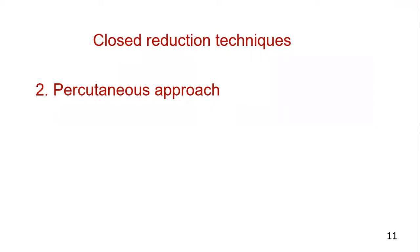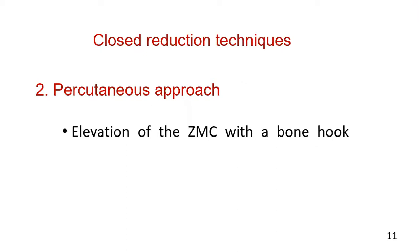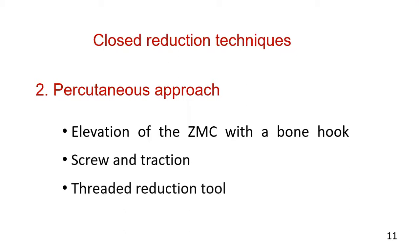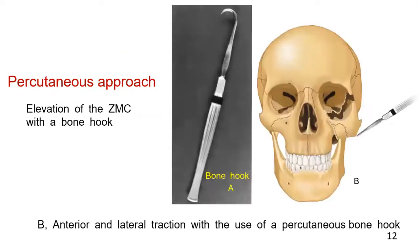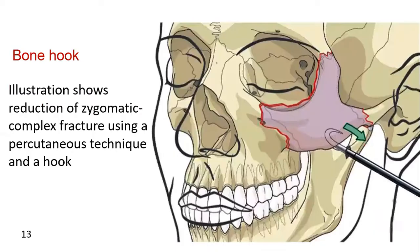The second technique is the percutaneous approach, with three sub-techniques available: elevation of the zygomatic complex with a bone hook, screw and traction, and a threaded reduction tool. Here you can see a bone hook and its application — anterior and lateral traction is applied with the percutaneous bone hook to achieve reduction of the zygomatic complex fracture.